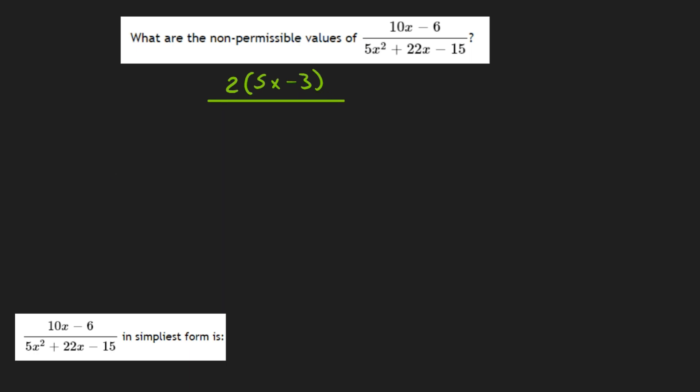And now let's factor the bottom one. So we can do 5 times 15 negative 75.